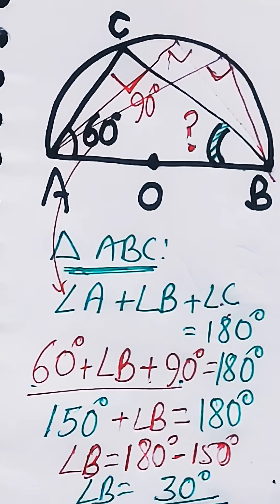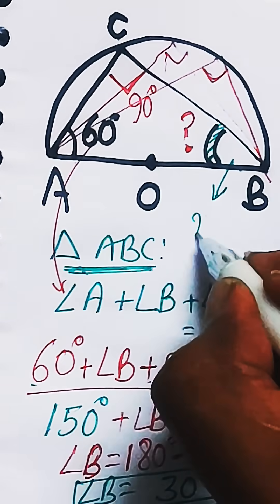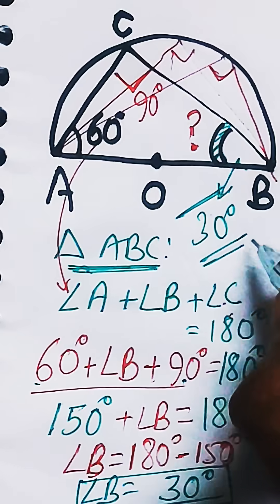So 30 degrees is the value of angle B, and this is your answer. In this way we have solved this question.